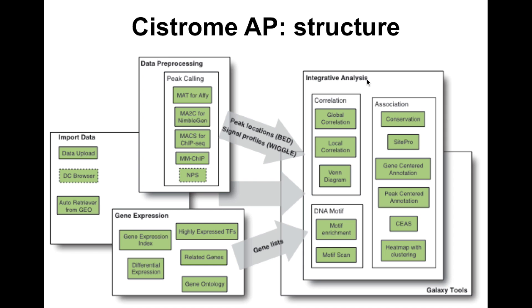A typical workflow using Cistrome AP is to upload the datasets, preprocess them using peak calling tools to generate peak locations and signal profiles, upload gene expression data to produce specific gene lists, and then use various integrative analysis tools to generate figures and reports.